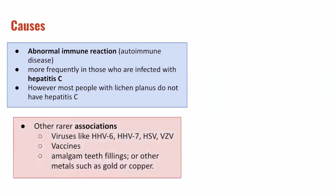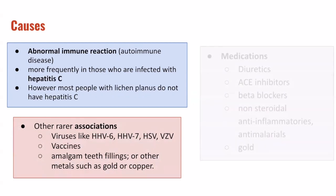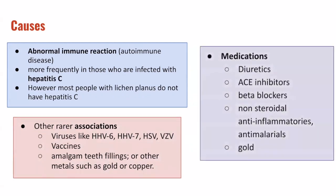There are some other rare associations to know for lichen planus. These include viruses such as HHV6, HHV7, herpes simplex virus, and varicella virus. It's also associated with some vaccinations, as well as amalgam teeth fillings and metals such as gold and copper.